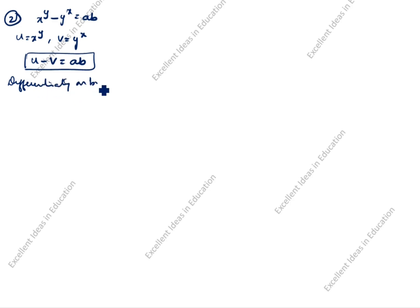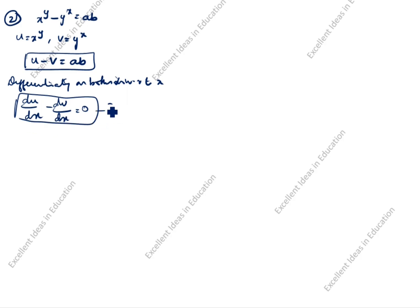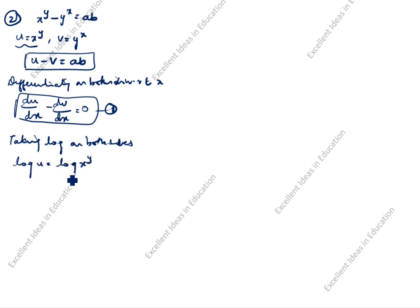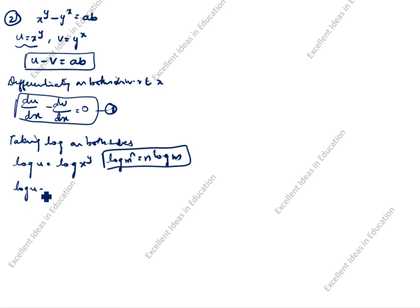Differentiating on both sides with respect to x: du by dx minus dv by dx is equal to differentiation of 80, which is constant term, so it comes 0. This is the first equation. Now taking log on both sides. First we will take u is equal to x power y, so log u is equal to log x power y. Using the formula log m power n equals n log m, we get log u is equal to y log x. Now differentiating on both sides with respect to x.